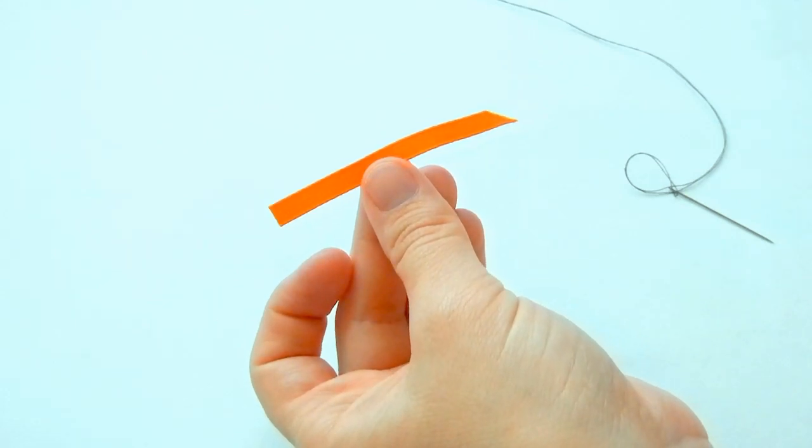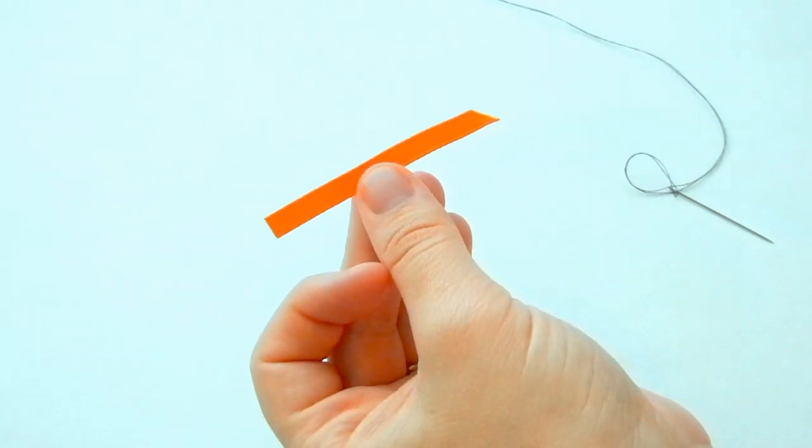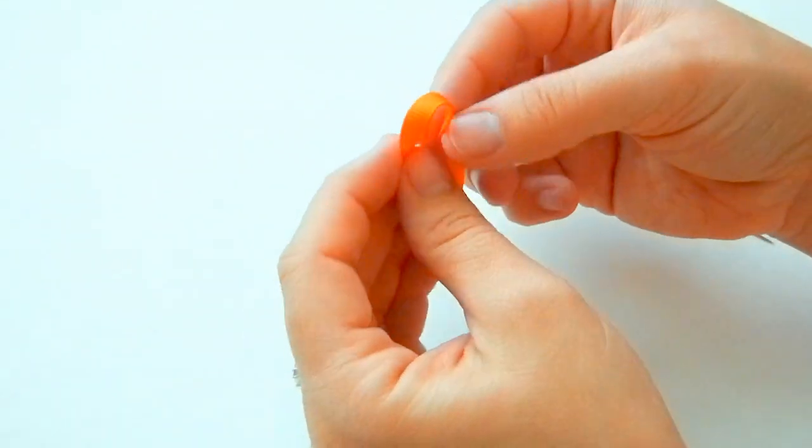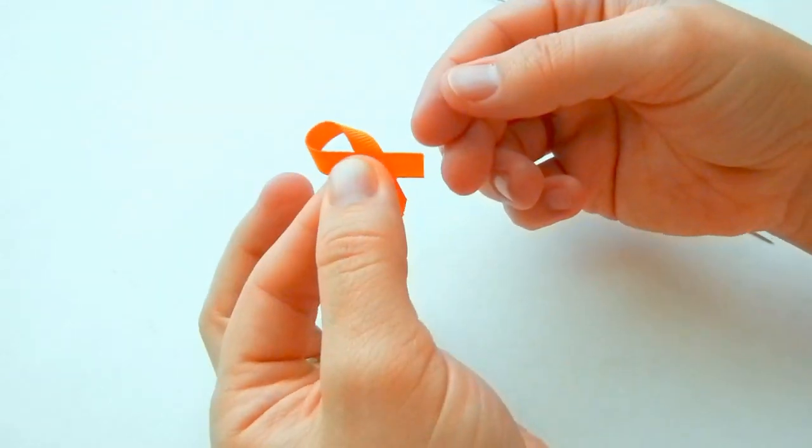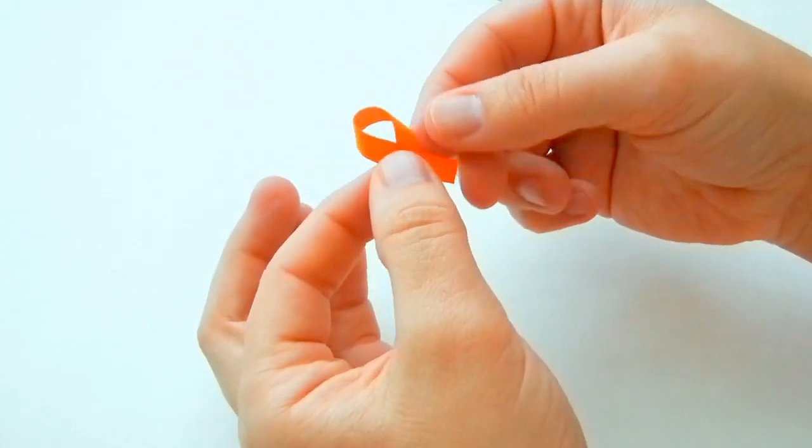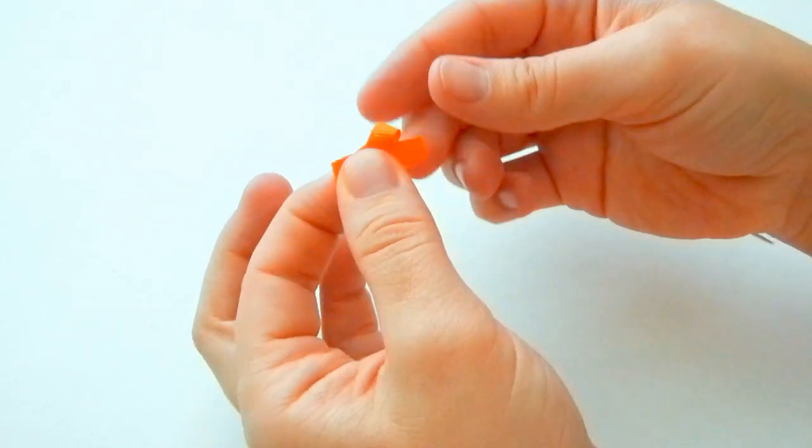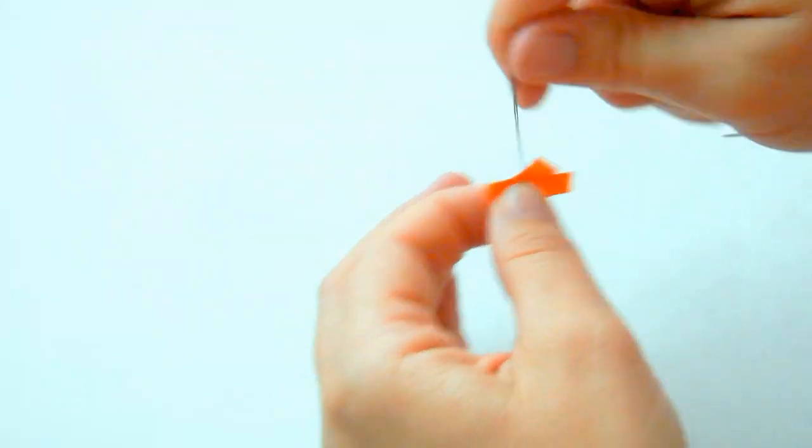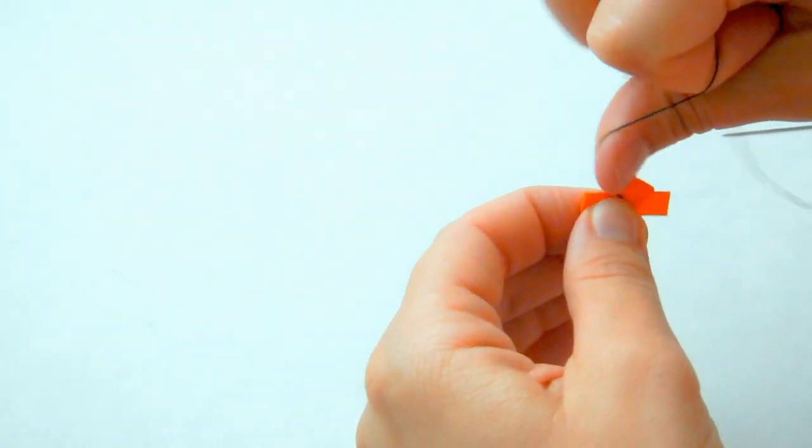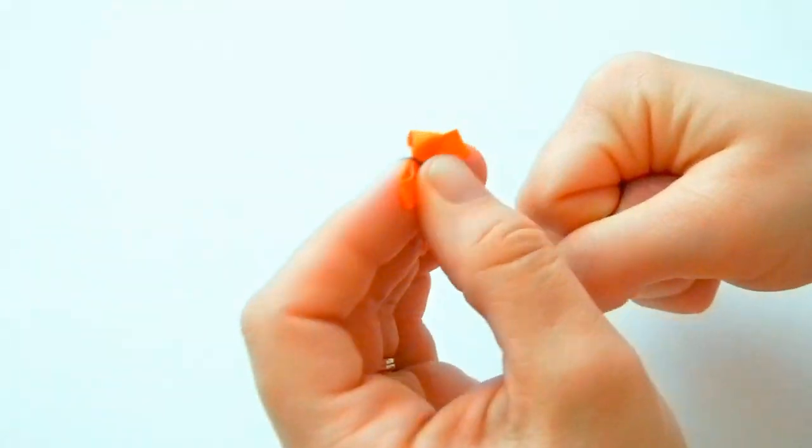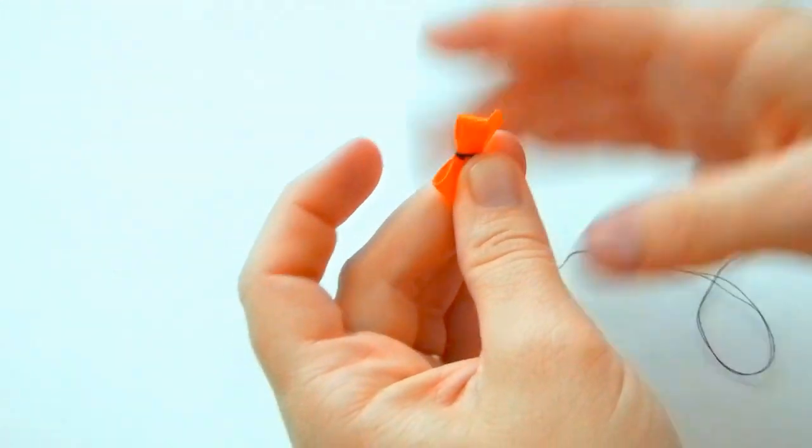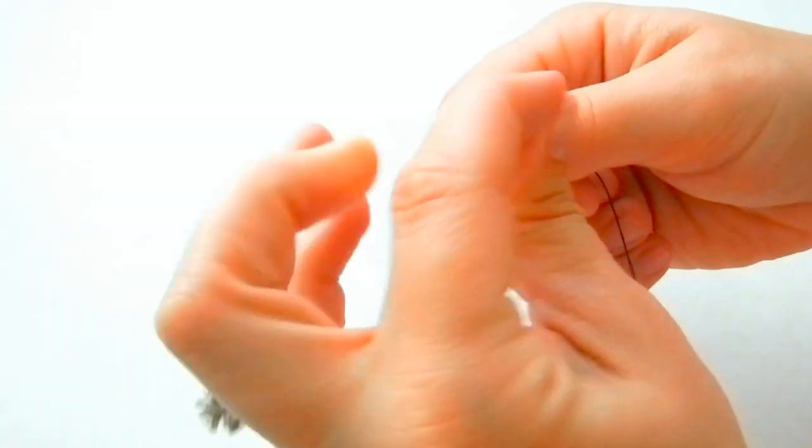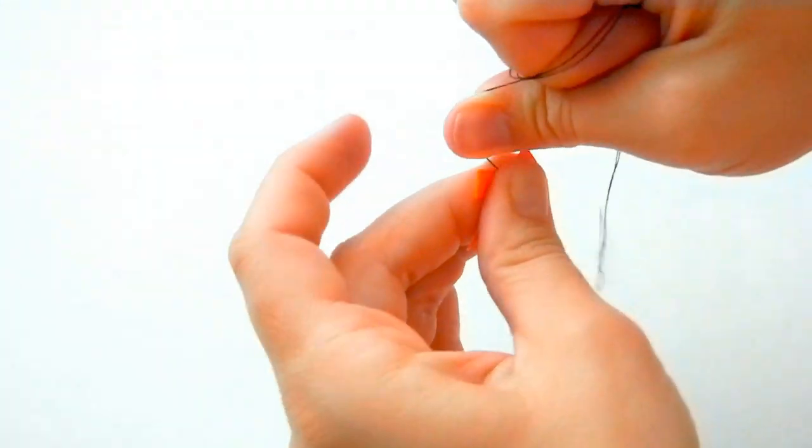Now we're going to make the bow for our spider. And this is just the simple bow. You bring the two tails down like this and then just bring the back down like that. Just take your needle and thread wrap around, tightening as you go.